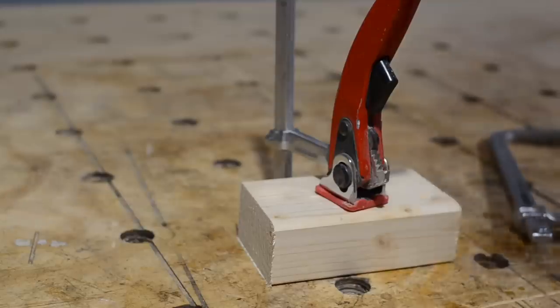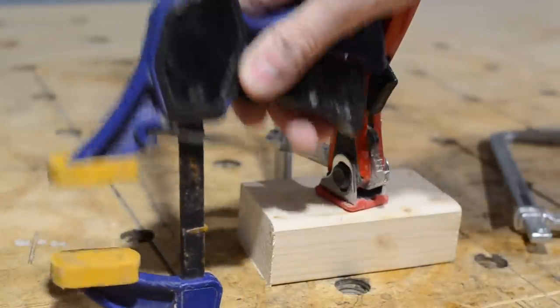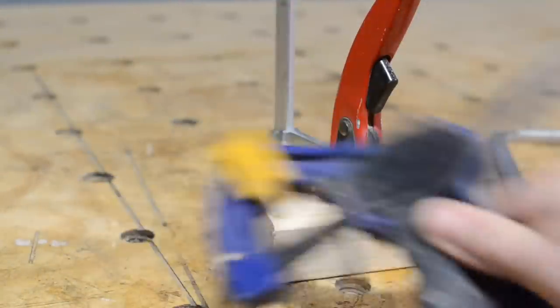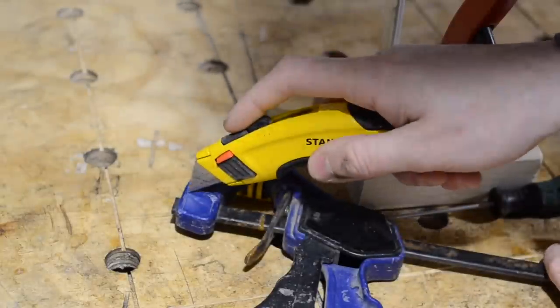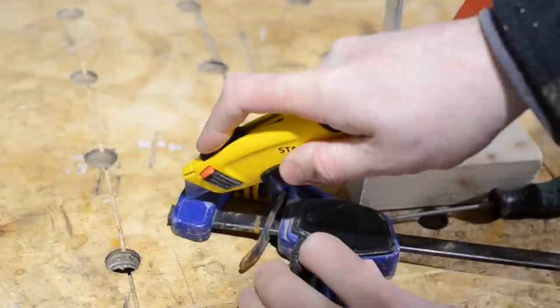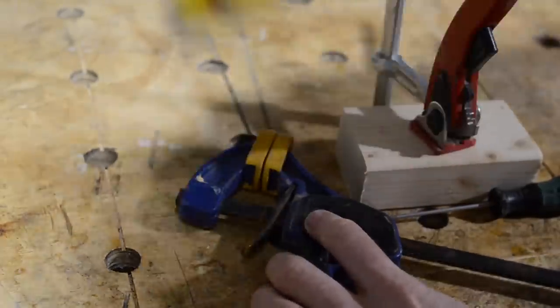I've only got two of them and that's because they're around £30 each. But I do have lots of these Irwin clamps and these cost about £12 a pair. I've seen people modify them to work in the bench so I thought I'd have a go.